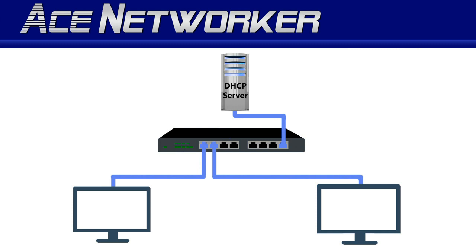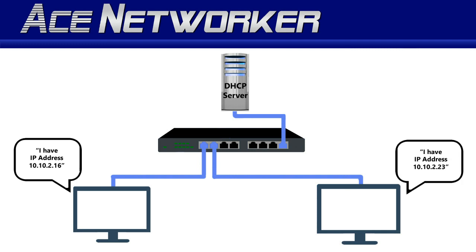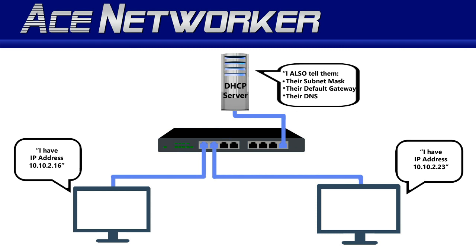This is much like a teacher assigning names or numbers to students in a class. Each host can have an IP address — a name on the network — so it can communicate with other hosts. DHCP also assigns other things to hosts, such as the subnet mask, the default gateway that host will use, and the DNS address.